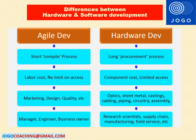The third difference is related to non-homogeneous work. Software teams are comprised of several different skill sets such as marketing, design, a few development skills, and quality. But hardware teams are typically comprised of many more skill sets related to hardware — product molded components, optics, sheet metals, castings, cabling, piping, circuits, assembly, and packaging during product development.